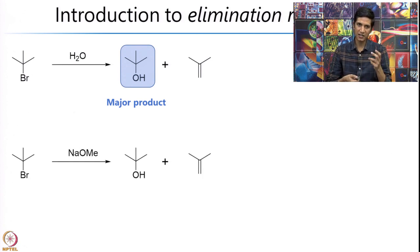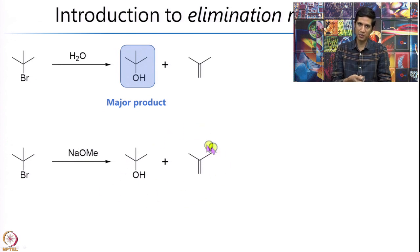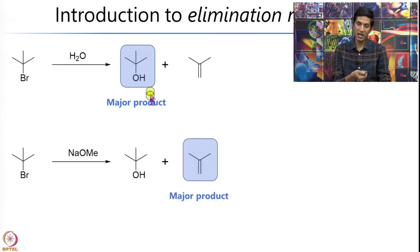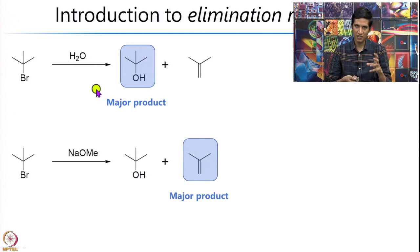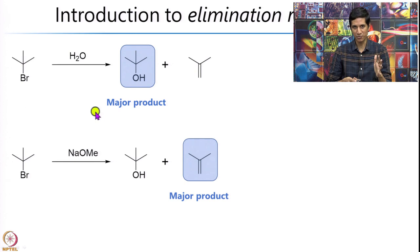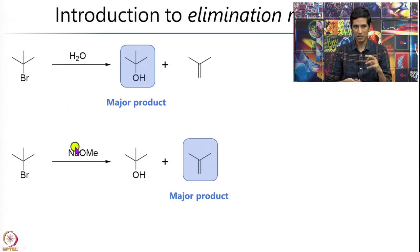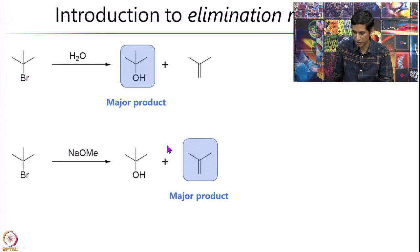However, if you do the same reaction under slightly different conditions — that is, instead of using water, if you use sodium methoxide — again there are two possibilities: the tertiary butyl alcohol and the alkene. But in this case, what one observes is that the alkene is the major product. This is what people call the elimination product, while the alcohol is the substitution product. The sodium methoxide, instead of replacing the Br, actually knocks out one of the hydrogens and leads to the formation of the alkene.